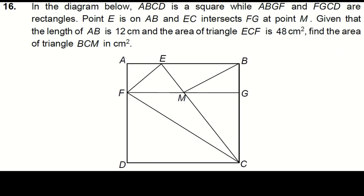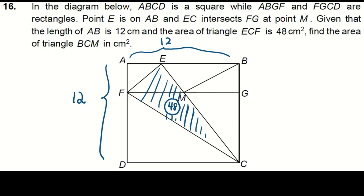Lastly, question 16 involves a square ABCD and rectangles ABGF and FGCD. With point E on AB and EC intersecting FG at the point M. Given AB is 12CM and the area of triangle ECF is 48CM square, we aim to find the area of triangle BCM.